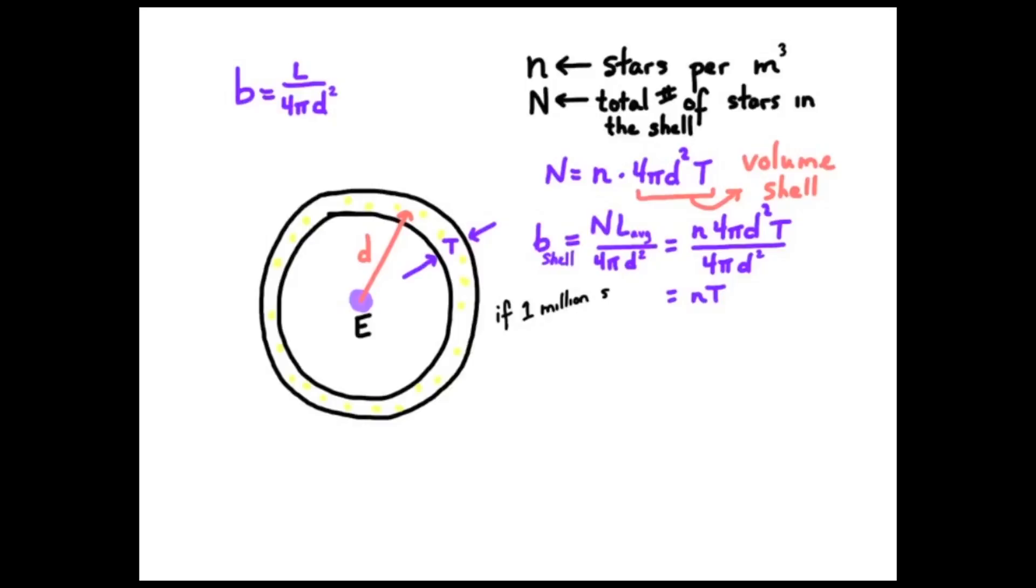Now remember Newton said the universe was infinite. We've got a lot of shells to add up here. If we had a million shells, then the brightness of those million shells would be a million times N times t times the average luminosity. If we had a billion shells, it'd be a billion times N times t times the average luminosity, and so on. If we had an infinite number of shells, then of course the brightness would approach infinity.